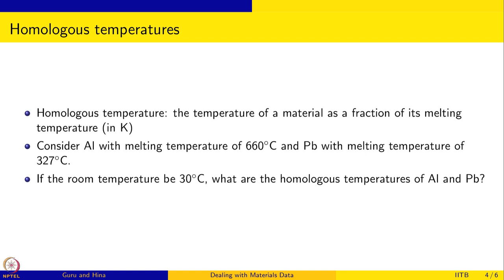Homologous temperature is a way of normalizing for the melting temperatures, because otherwise it becomes difficult to interpret results. For example, if you take ice, at minus 1 degree Celsius you might think it is very cold, but for ice it is actually a very high temperature — low temperature for ice might be minus 20 or minus 40. So we want to get rid of this dependence on where the melting temperature is. This concept is very useful for comparing different materials.